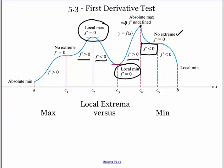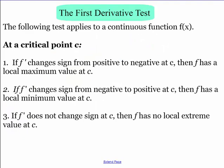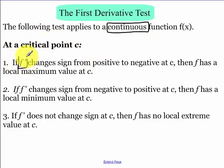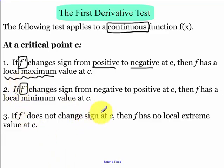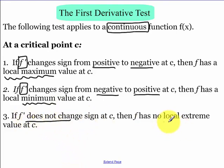Our first derivative test is really important — this test applies to a continuous function. Keep that in mind: our function has to be continuous. So if our derivative changes from positive to negative, we have a local maximum. If our derivative changes signs from negative to positive, we have a local minimum. Now if it doesn't change signs, we have no extrema.